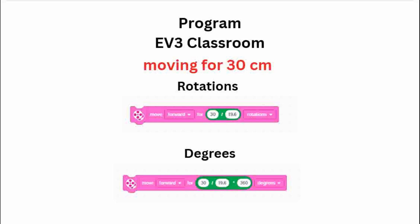This is our EV3 Classroom program. Our goal is to move for 30 centimeters. And these two programs will both make the robot move 30 centimeters, just translating it into rotations and degrees respectively.